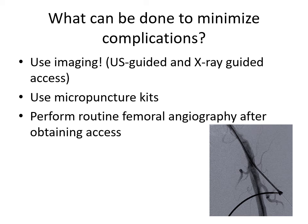What should you do to minimize complications? Plan ahead. Study all available imaging and be aware of the anatomy. Use imaging to guide you in obtaining access — use both fluoroscopy and ultrasound for better results. Fluoroscopy can help you prevent too high an access, whilst ultrasound can improve your accuracy and prevent too low an access. Use micropuncture kits. Perform routine femoral angiography immediately after obtaining access. Good luck and thanks for watching.